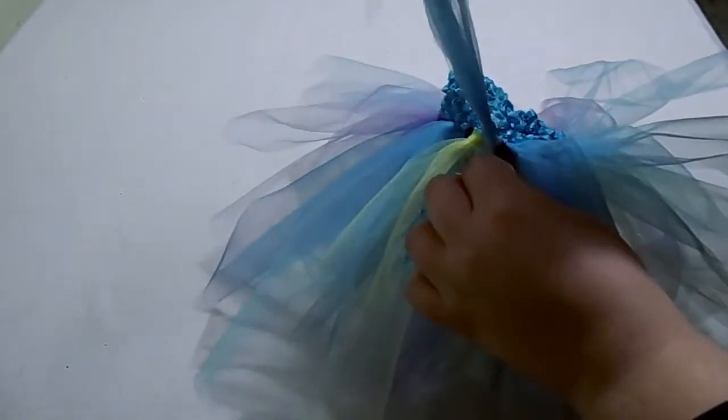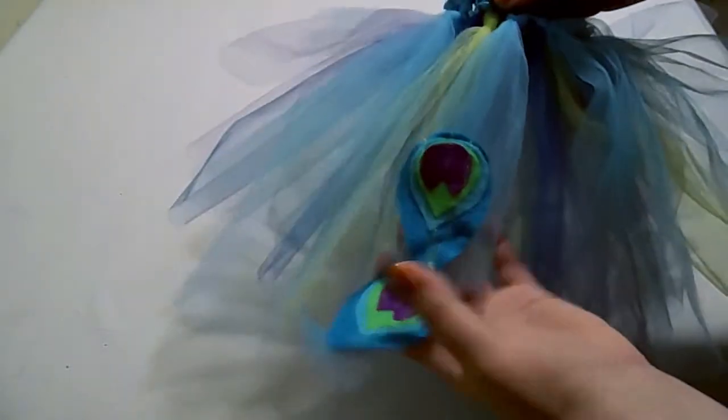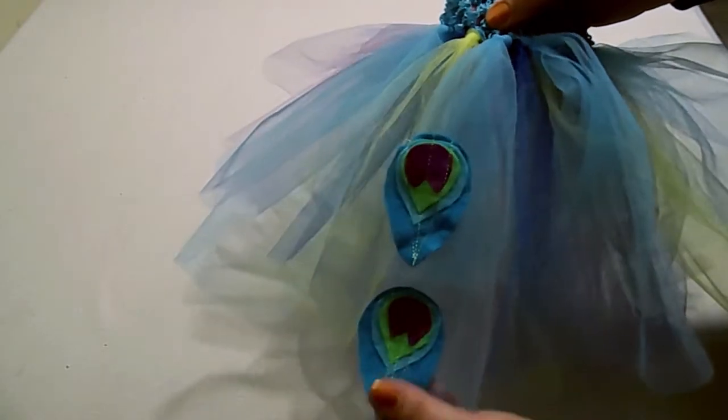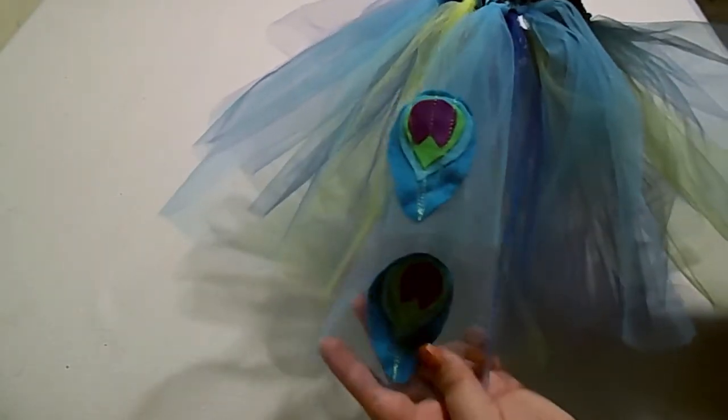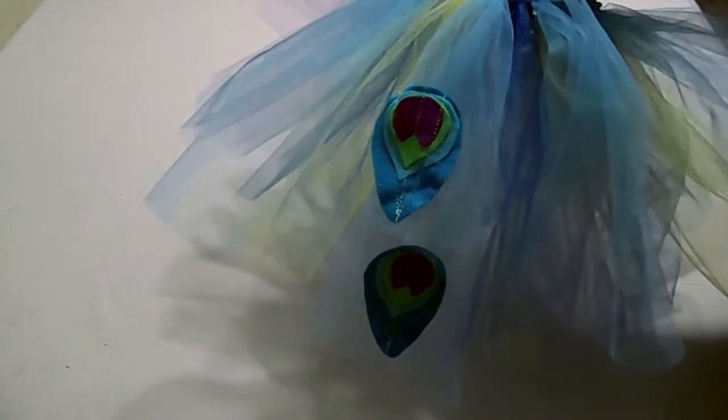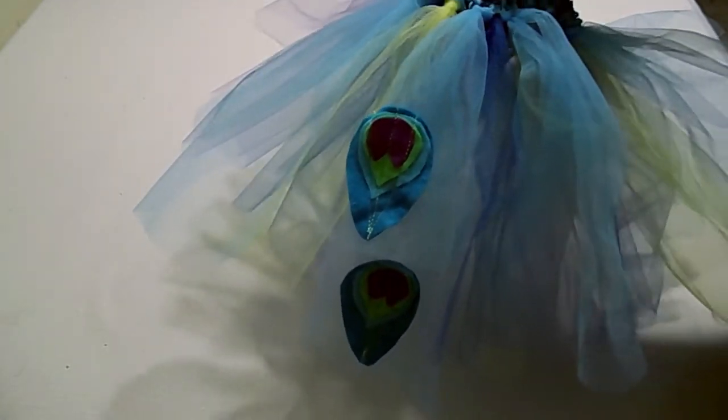Find the opening and then just thread our feathers through and pull. And there we have it. You may like to do more at the back or choose a back side for your tutu and put more on the back as opposed to the front so it looks like a real peacock's tail.